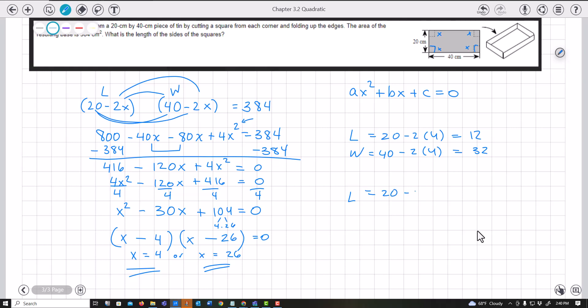Plugging in 26 gives a negative value, which makes no sense. 40 - 2(26) = -12. That can't work, so we ignore it. Thus, the length of the sides of the square is X = 4.